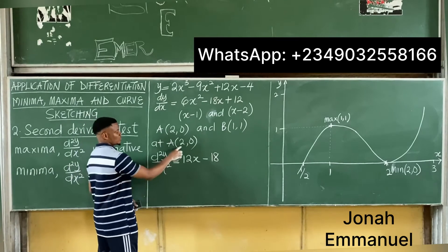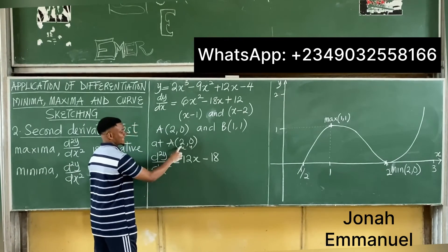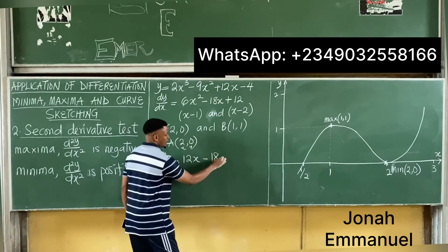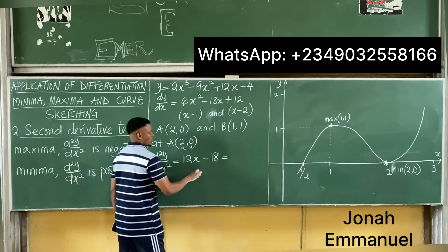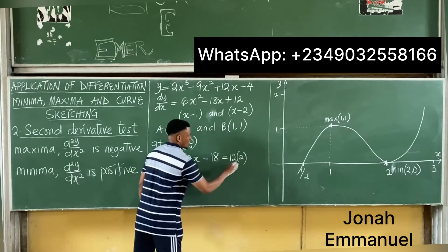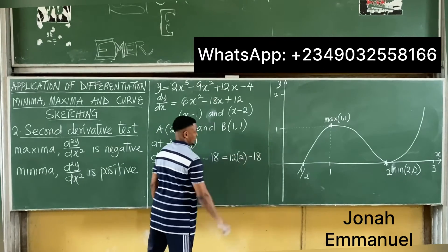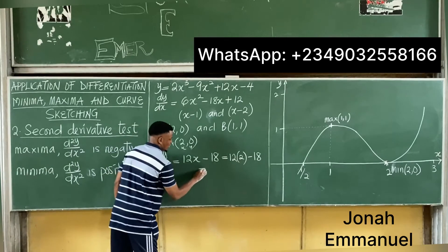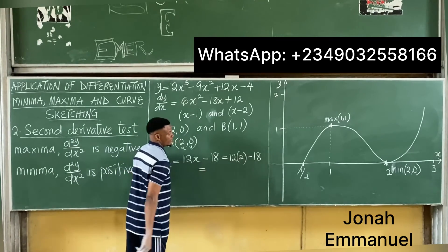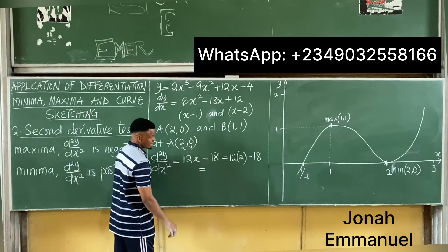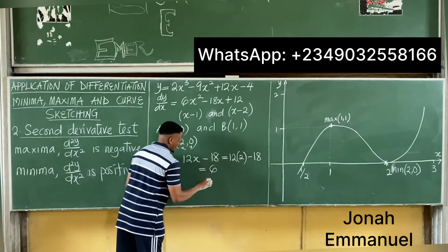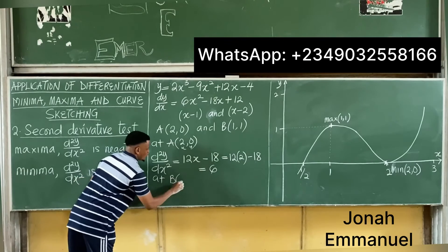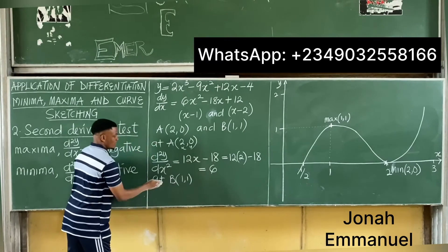Now let's put x = 2 into d²y/dx² = 12x - 18. That gives 12(2) - 18 = 24 - 18 = 6. The result is positive.